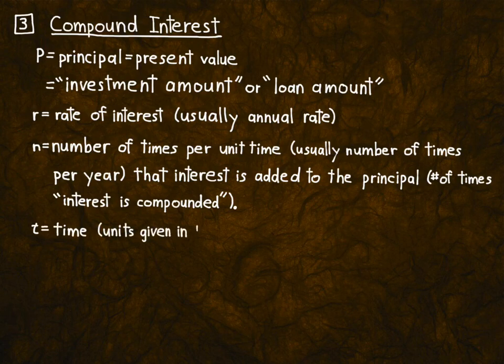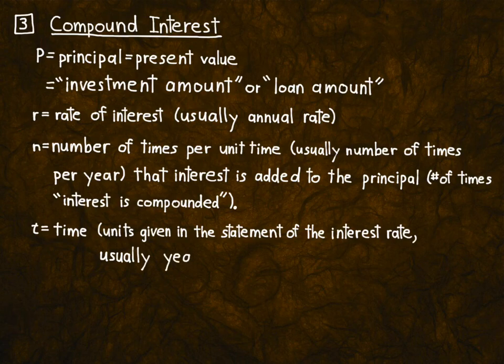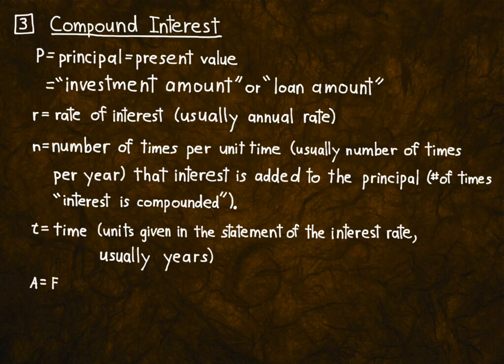T is time in the units given in the statement of the interest rate. Always look at how the interest rate is stated to determine the units of time — it's usually years. For payday loans it could be much shorter, and savings certificates typically provide an annual rate.